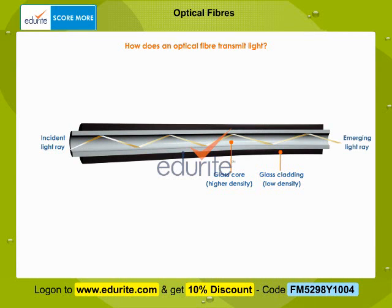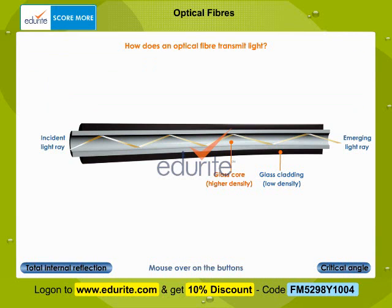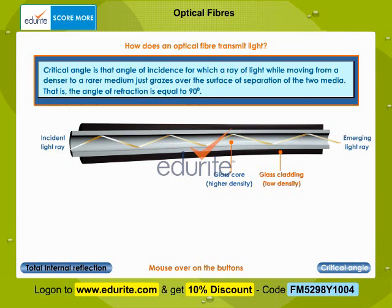Optical fibers make use of total internal reflection to confine light within the core of the fiber. The core of an optic fiber has a higher refractive index than the cladding, and hence the light suffers total internal reflection. Although the cladding does not carry light, it is nevertheless an essential part of the fiber. The cladding is not just a mere covering — it keeps the value of the critical angle constant throughout the whole length of the fiber.